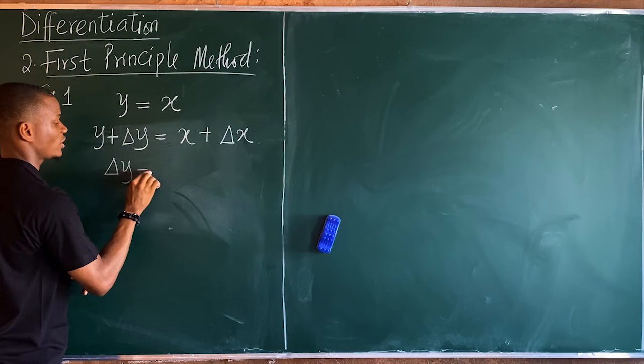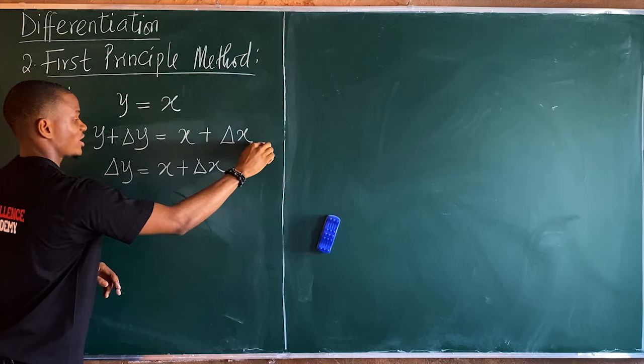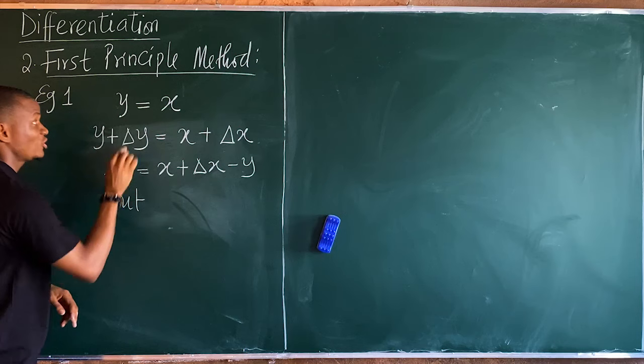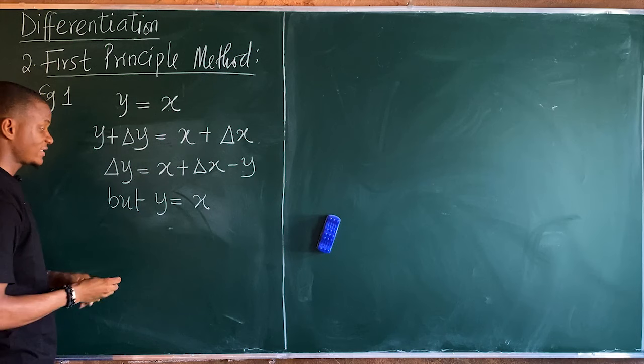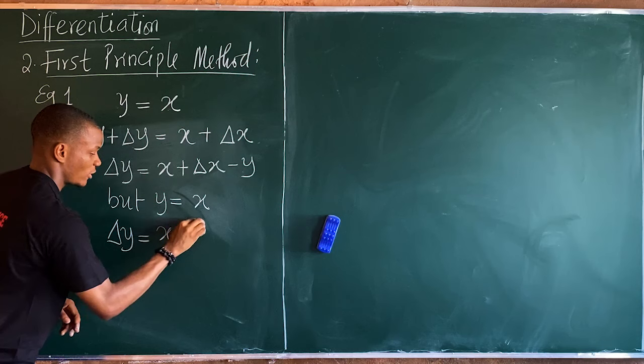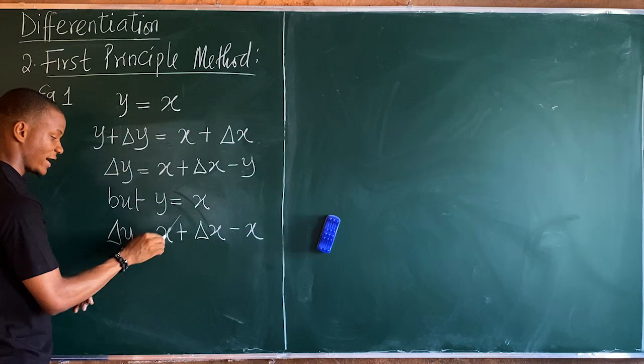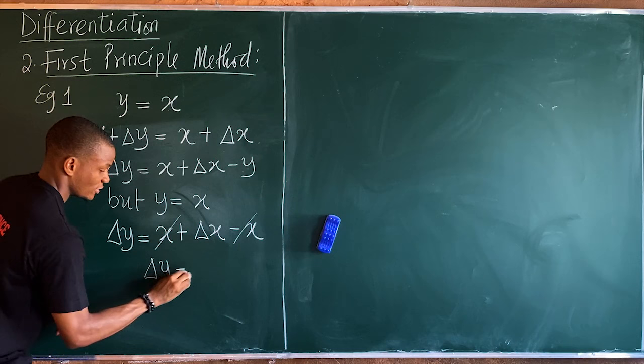Moving y over, we get Δy equals x plus Δx minus y. Since y equals x, substituting gives Δy equals x plus Δx minus x.